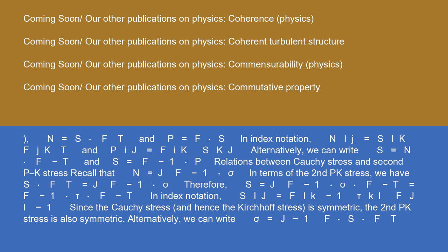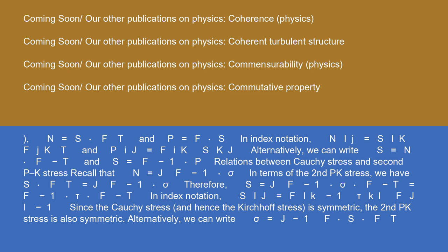Relations between Cauchy stress and second Piola-Kirchhoff stress: recall that N equals J F-inverse sigma. In terms of the PK2 stress, we have S F-transpose equals J F-inverse sigma. Therefore, S equals J F-inverse sigma F-minus-transpose equals F-inverse tau F-minus-transpose. In index notation: S-ij equals F-ik-inverse tau-kl F-jl-inverse. Since the Cauchy stress, and hence the Kirchhoff stress, is symmetric, the second Piola-Kirchhoff stress is also symmetric. Alternatively, sigma equals J-inverse F S F-transpose, or tau equals F S F-transpose. From the definition of push-forward and pullback operations: S equals phi-star(tau) equals F-inverse tau F-minus-transpose, and tau equals phi-star(S) equals F S F-transpose. Therefore, S is the pullback of tau by F, and tau is the push-forward of S.